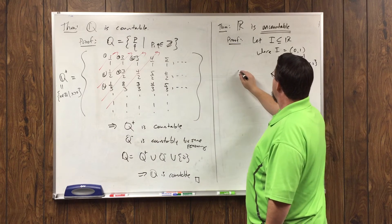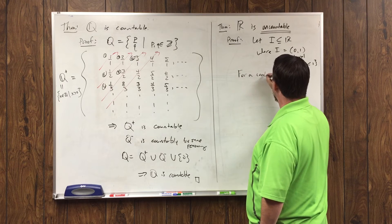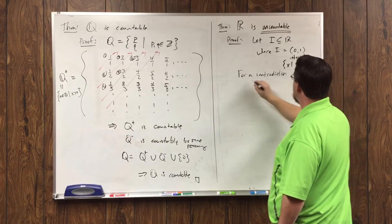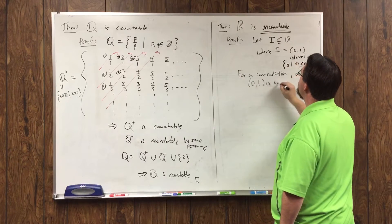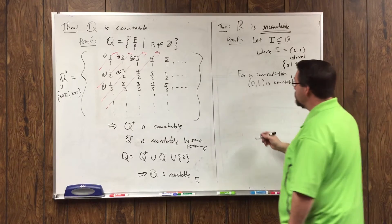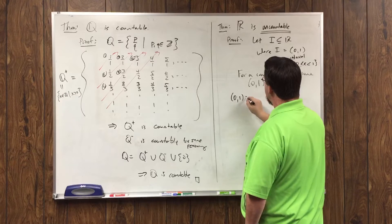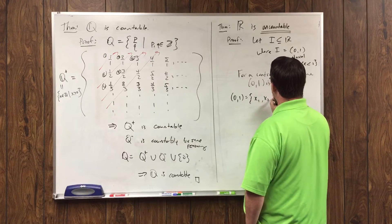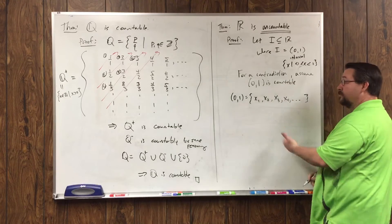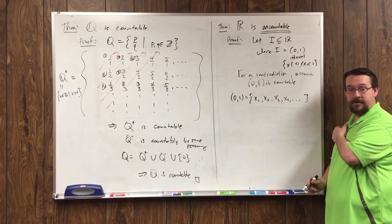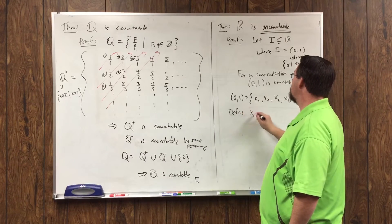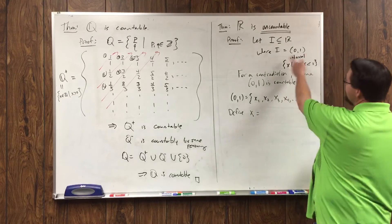So for a contradiction, assume the interval (0,1) is countable. In other words, (0,1) is the set {x1, x2, x3, x4, and so on}. To say it's countable means I can list out all of the elements.